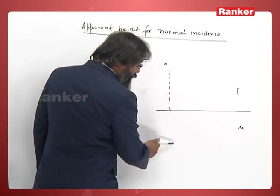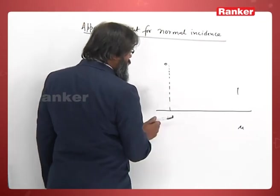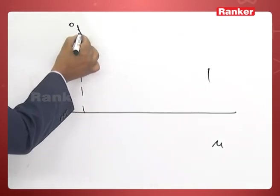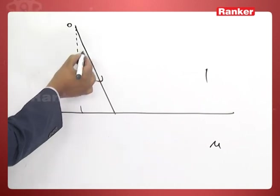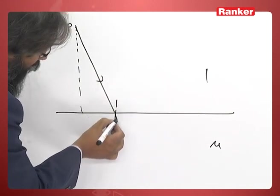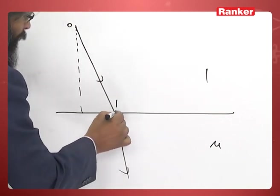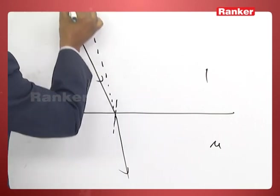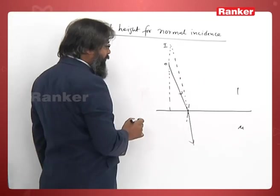We are seeing from this place and the incidence is normal. So just consider a paraxial ray—this angle is very small. Then this ray gets refracted like this and it seems to be coming from I. That means this is the object and this will be its image.